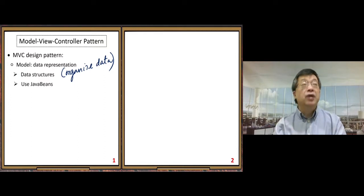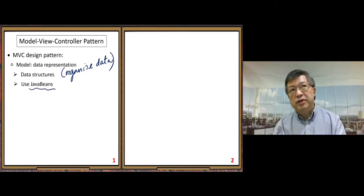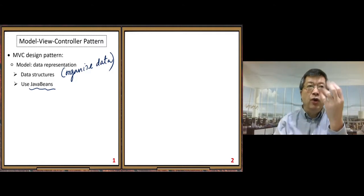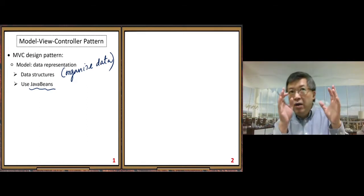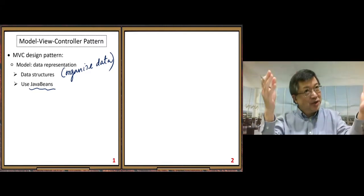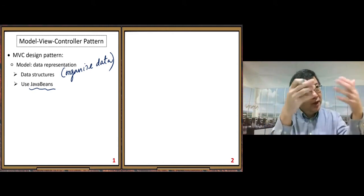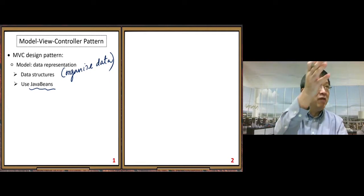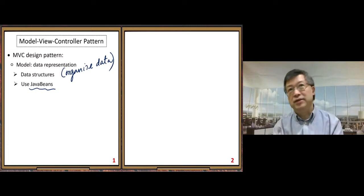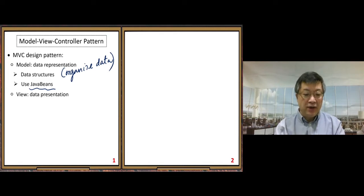So how do we organize data? We use Java Beans — that's the best form to organize data. Java Beans contain properties used to store data, along with getters and setters so we can access data through them. That's the basic Java Bean background you should have.